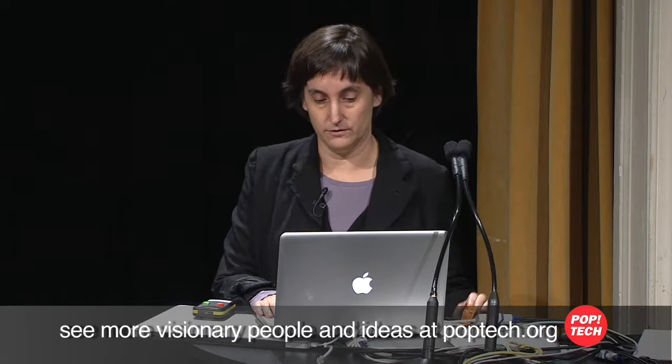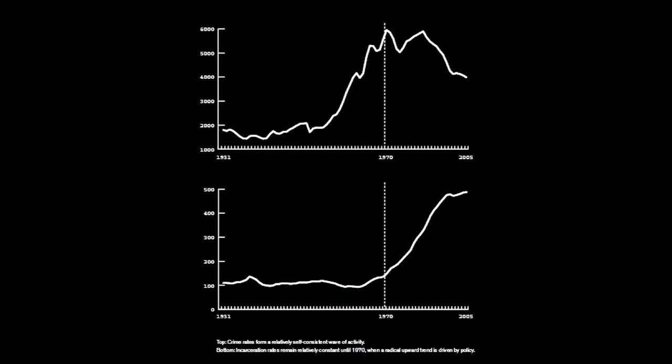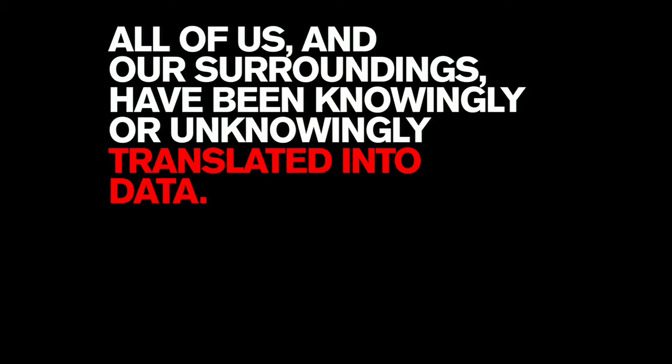At the top is a graph of crime rate from 1931 to 2005, and at the bottom is incarceration rate. You notice that while crime is going up and down, incarceration steadily climbs, despite the fact that crime has gone down. All kinds of statistics you'll hear about — incarceration steadily moves up.